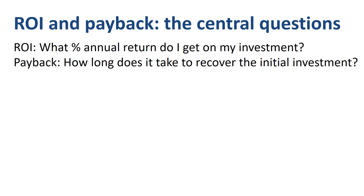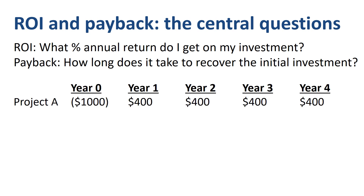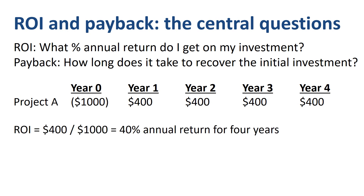Let's apply both methods to project A. In year 0 — today — we have a cash outflow of $1,000. The brackets around the number indicate that it is negative, a cash outflow. Over the course of the project we have $1,600 worth of benefits, cash inflows in total, split evenly over 4 years at $400 each. Return on investment is the annual benefit of $400 divided by the investment of $1,000, so 40% ROI for 4 years.